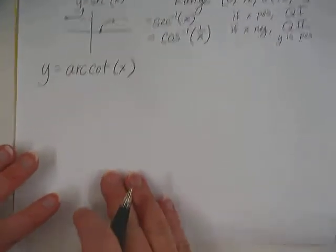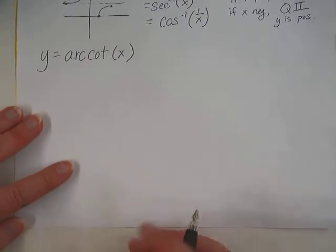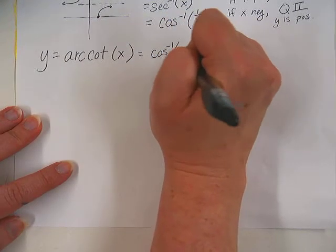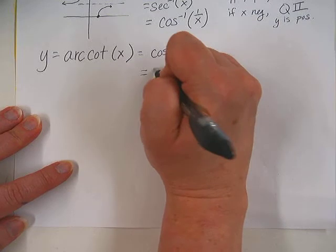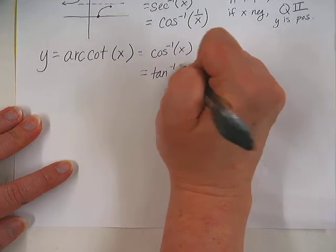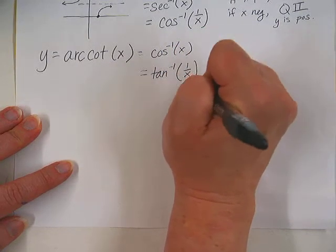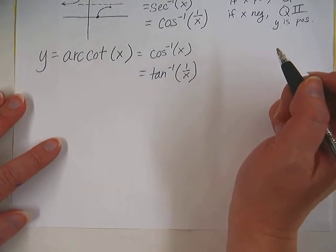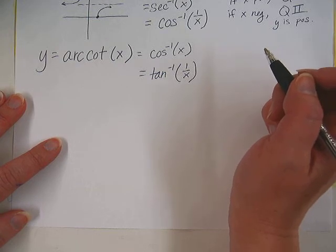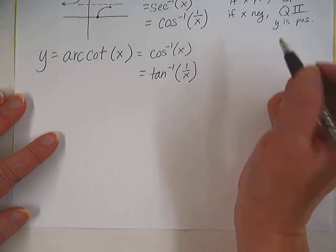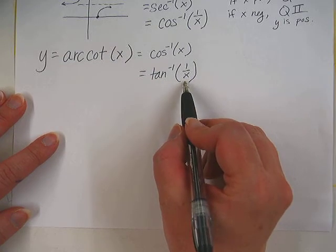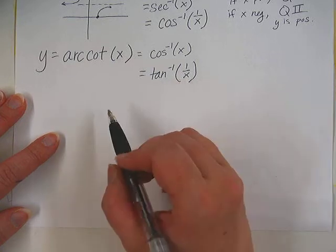Now cotangent is the tricky one. Cotangent inverse has to be, if you want to find it on the calculator, found by using tangent. But the problem you're going to see in just a minute here is that inverse tangent and inverse cotangent are in different quadrants for your negative x values. And so that means if you use a calculator to find the value of a negative x, then you have to switch it to a different quadrant.